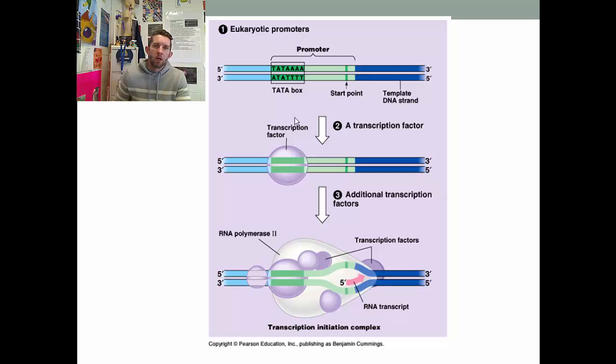So the transcription factors are going to land at the TATA box. They're going to assemble what's going to be called a transcription complex. They're going to tell RNA polymerase where to land. Here's some more of these transcription factors that have assembled. And then those combined with RNA polymerase to form the transcription complex. They start moving upstream. They open up the DNA.